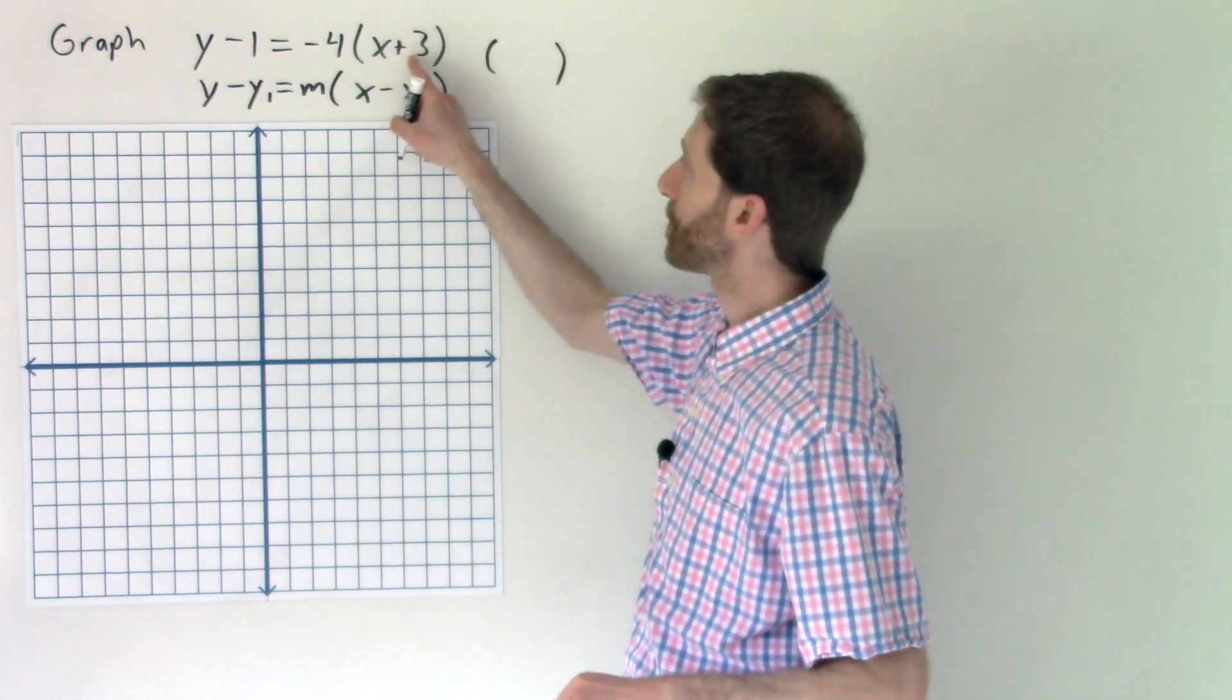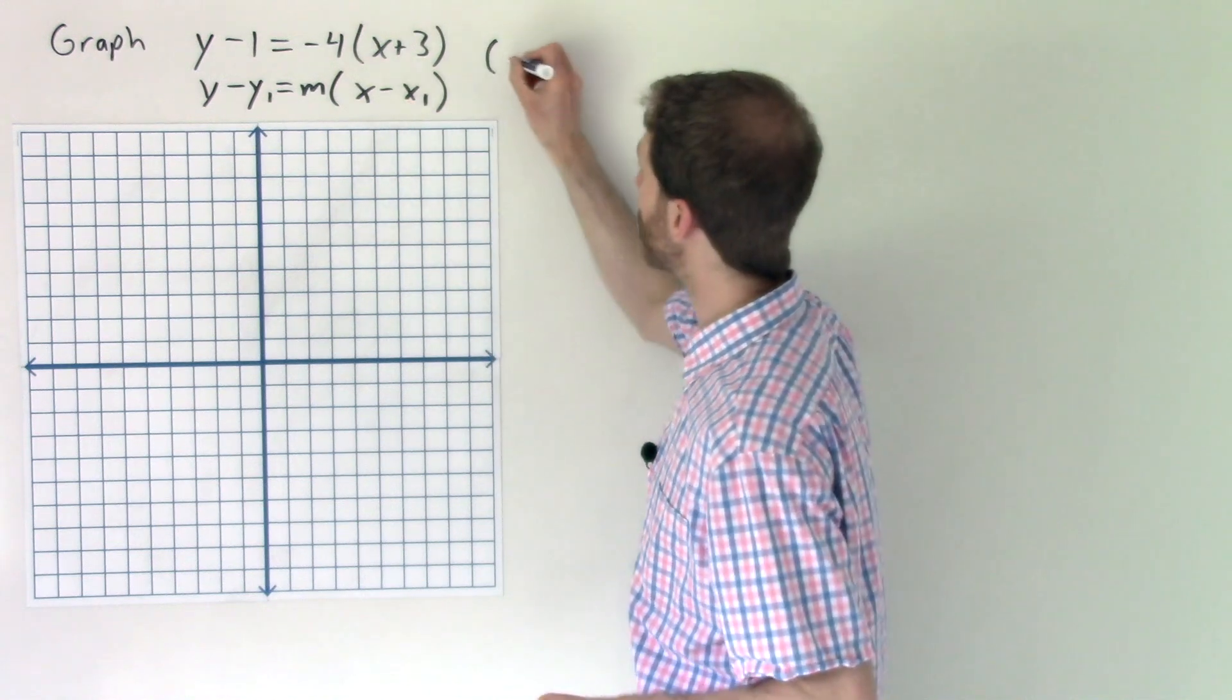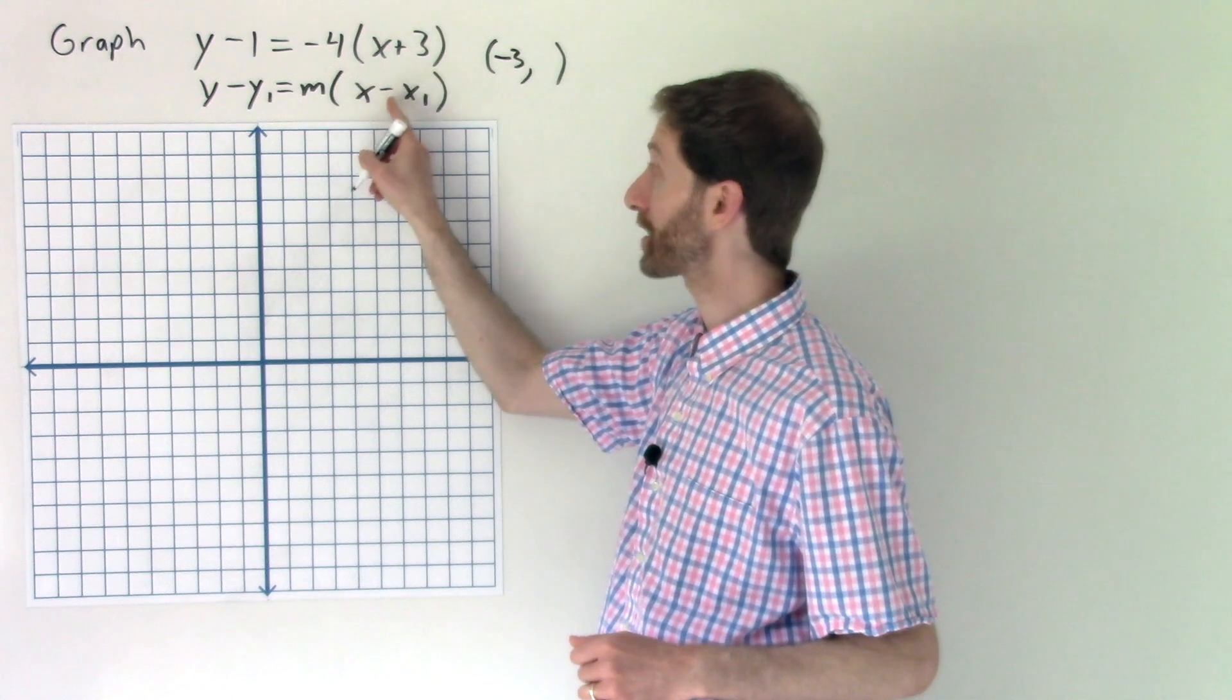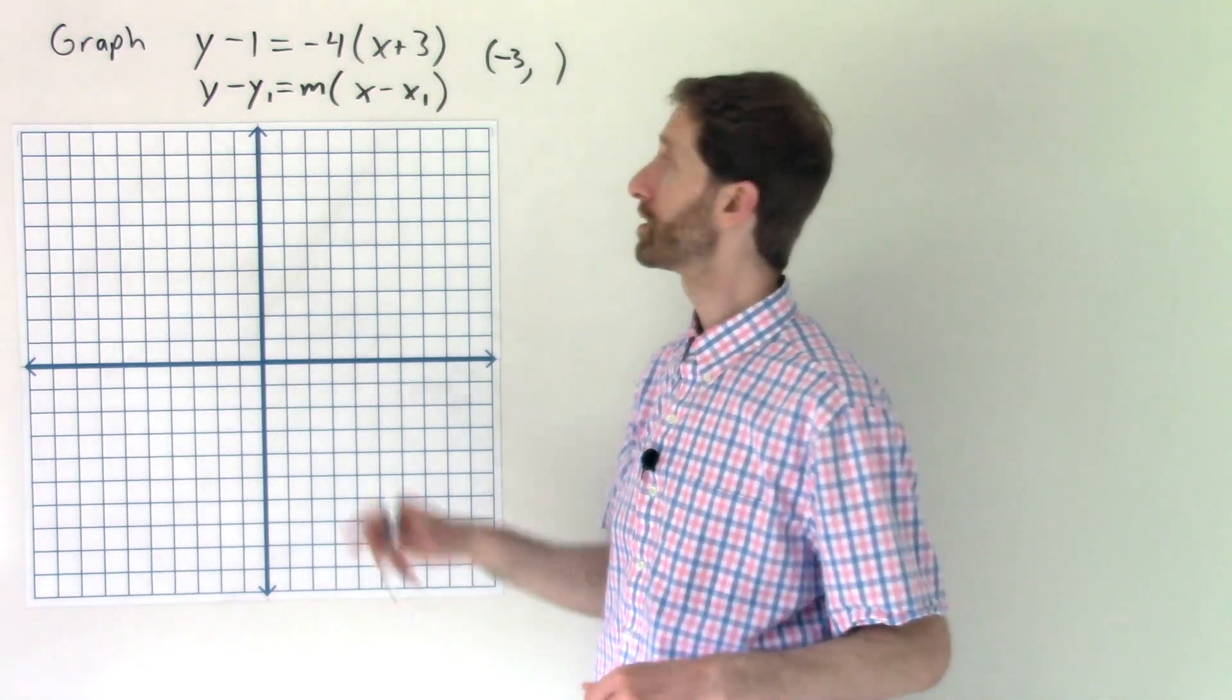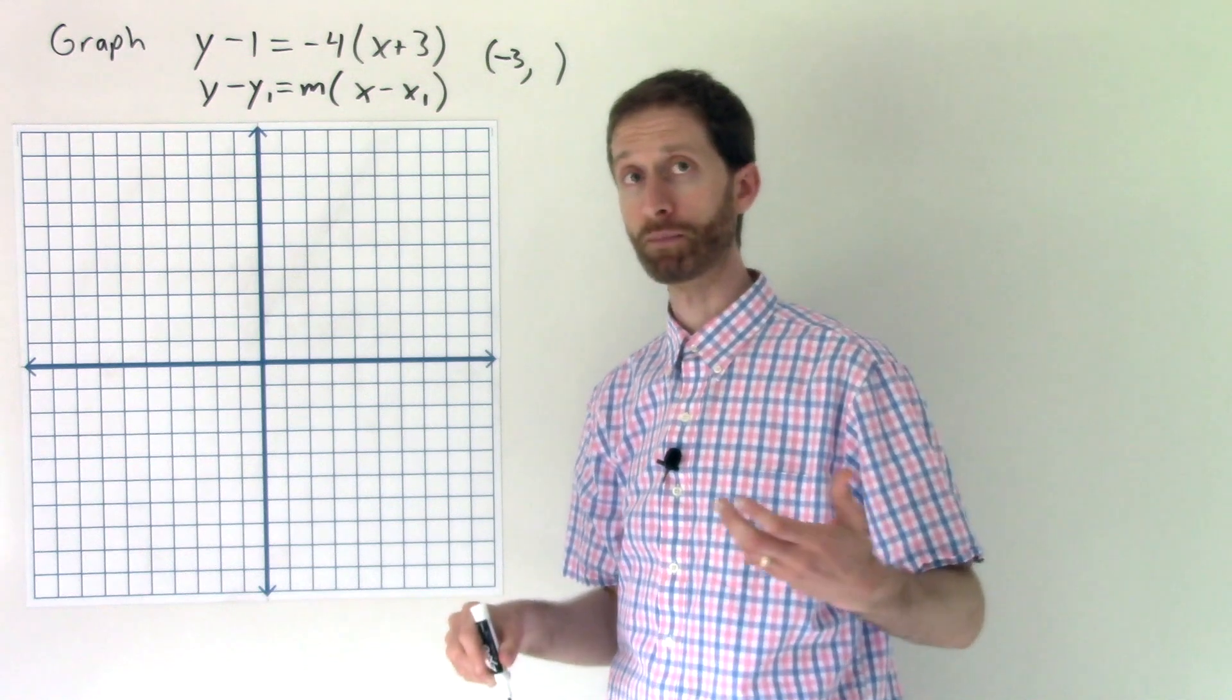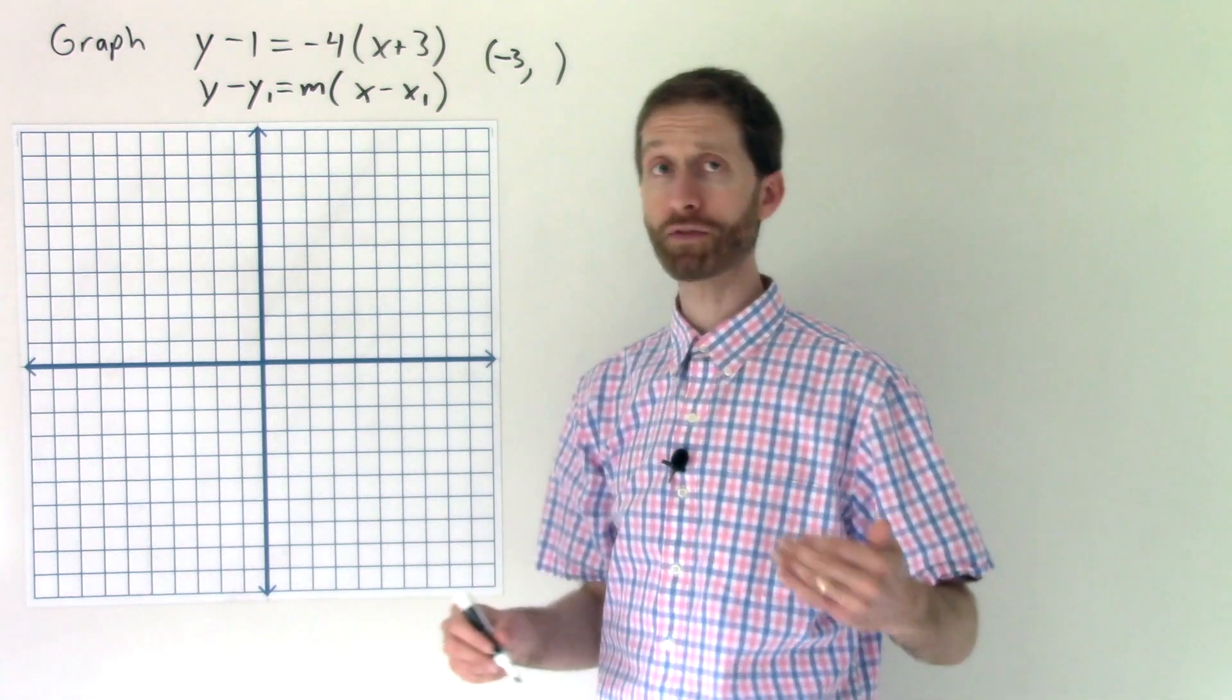If it's x plus 3, then that must mean that we did x minus a negative 3. If you think about it, how do we get a plus 3 from x minus? x minus a negative 3 gives us x plus 3. Another way that it's taught is think about what number zeroes this out. Negative 3 plus 3 is zero. It's a distance of zero from negative 3. So that's one way of thinking about it as well.